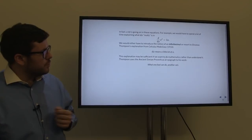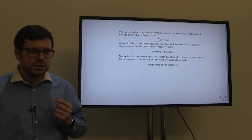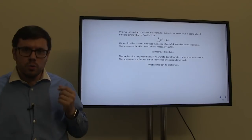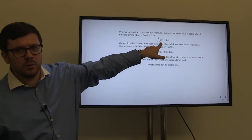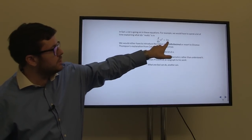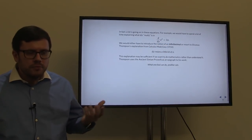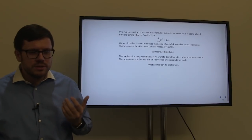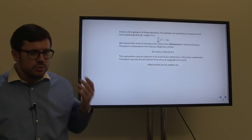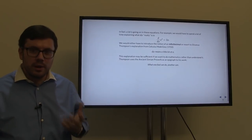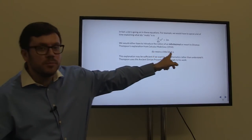A lot is going on in these equations. For example, we would have to spend a lot of time explaining what dx really is in the equation where we say the derivative of x squared is 2x. We would either have to introduce the notion of an infinitesimal, which is what dx actually is, or resort to Sylvanus Thompson's explanation from Calculus Made Easy that dx means a little bit of x.